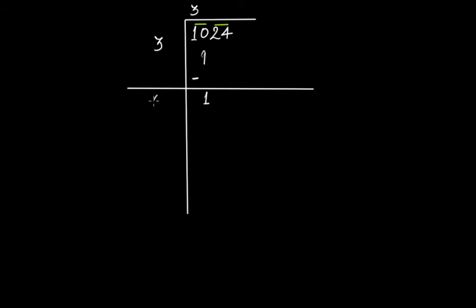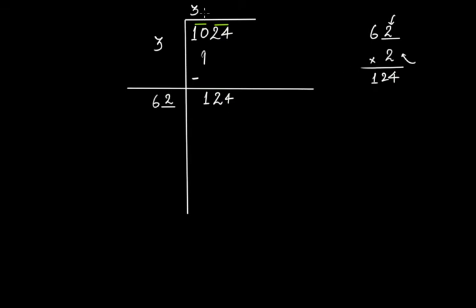Now, 2 times 3 is 6. Put a blank space here and bring down the next pair, writing 24 here — so you now have 124. Think of what digit you can put next to 6 such that the new number multiplied by that same digit equals 124. We already know 1024 is a square number. If you put 2 here and multiply 62 by 2, you get 124. Write 2 in both places and you get 124.